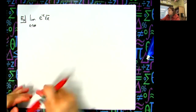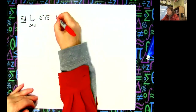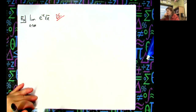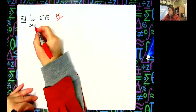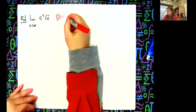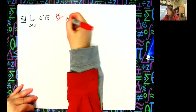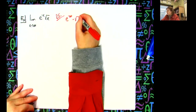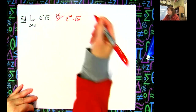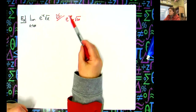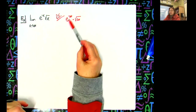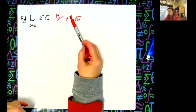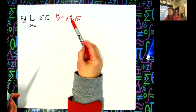We definitely want to do direct substitution always first. So I'm going to plug in positive infinity here. I'll have e raised to the negative infinity times the square root of a really big number. So this is a constant raised to an exponent that's negative and getting really, really big.